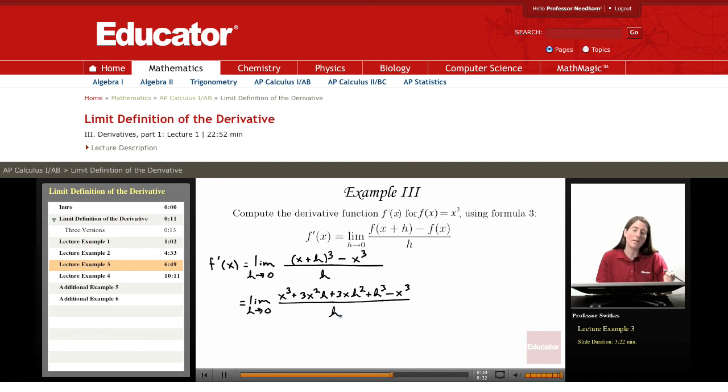the terms in the numerator that do not involve h should cancel out at this point. And you can see that they are, the x cubed terms here are canceling out. They're dropping out and everything else remaining in the numerator has a factor of h.